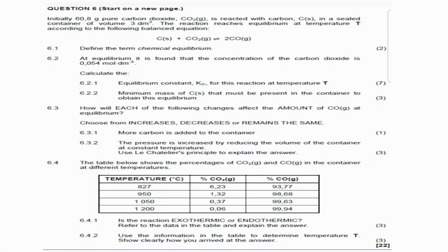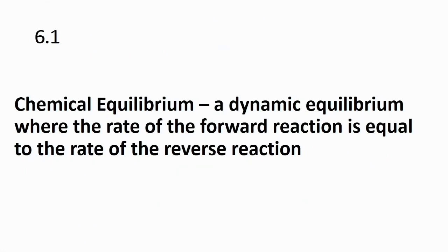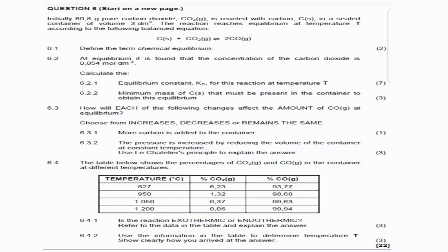Chemical equilibrium is a dynamic equilibrium where the rate of the forward reaction is equal to the rate of the reverse reaction. For 6.2, at equilibrium it is found that the concentration of carbon dioxide is 0.05 mol·dm⁻³.